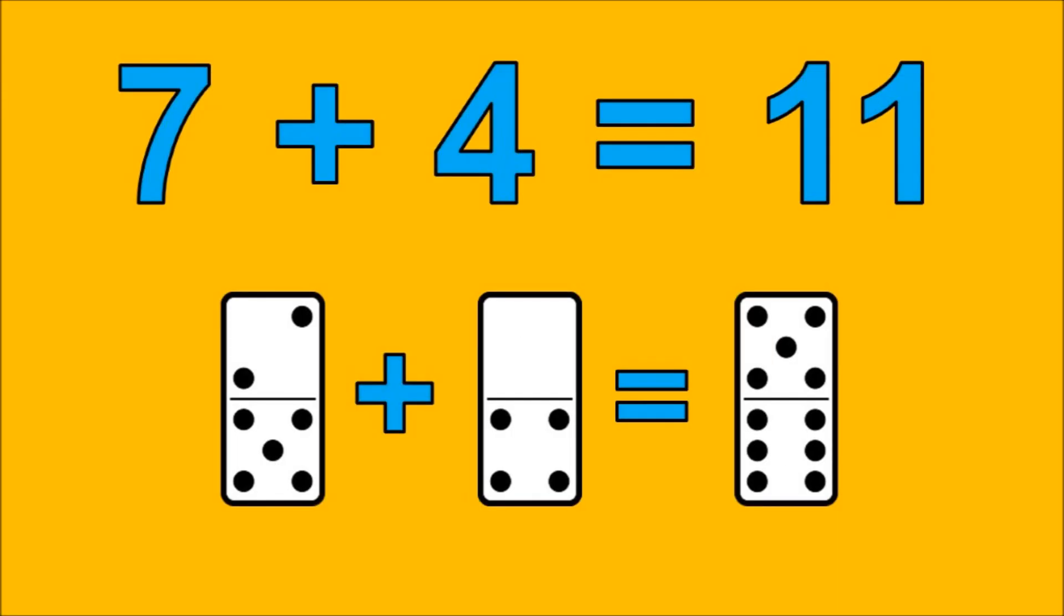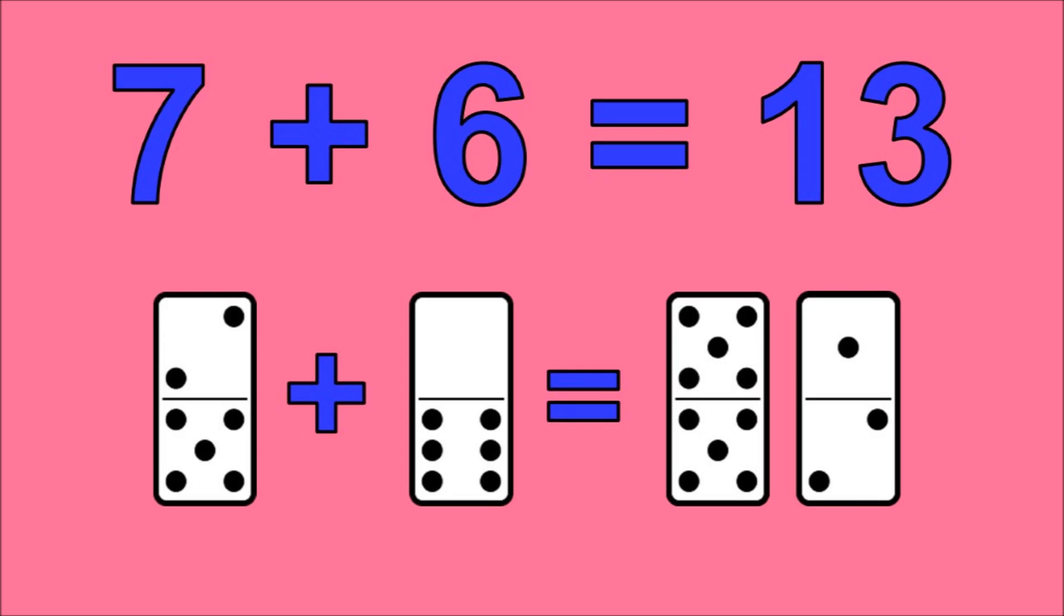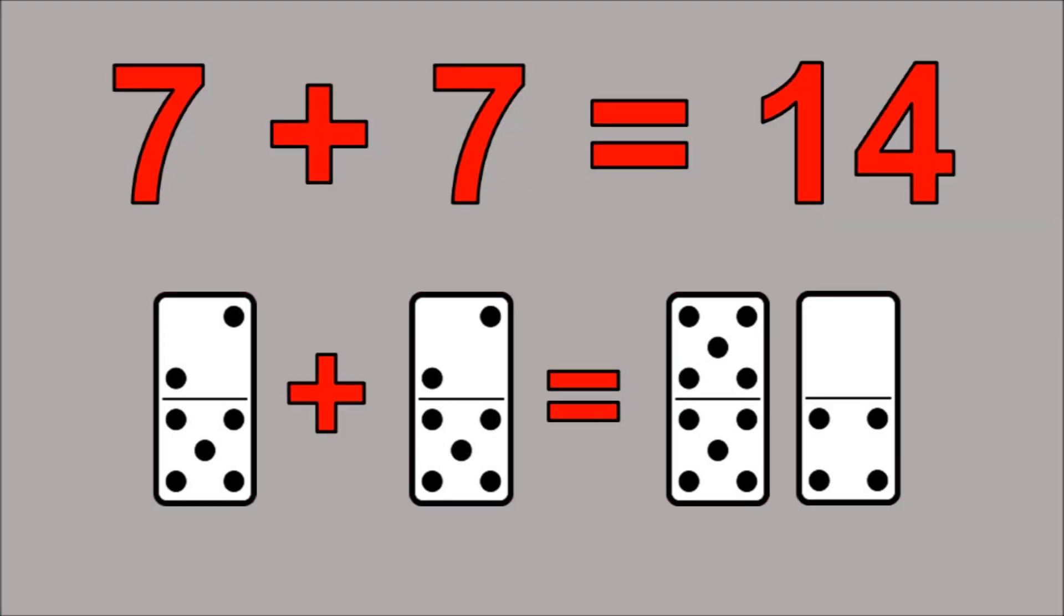7 plus 4 is 11, 7 plus 5 is 12, 7 plus 6 is 13, 7 plus 7 is 14.